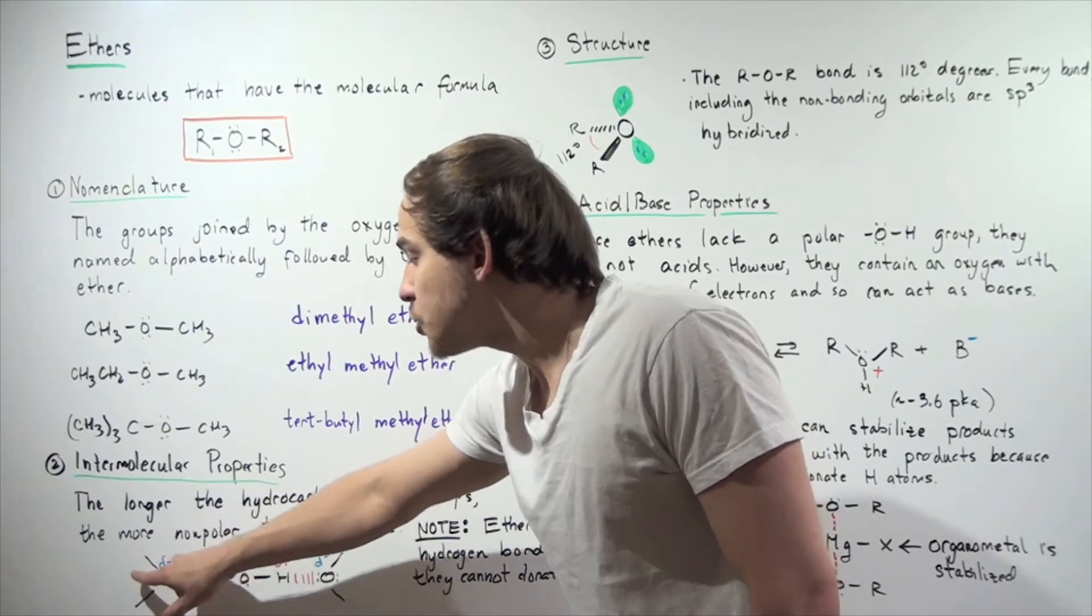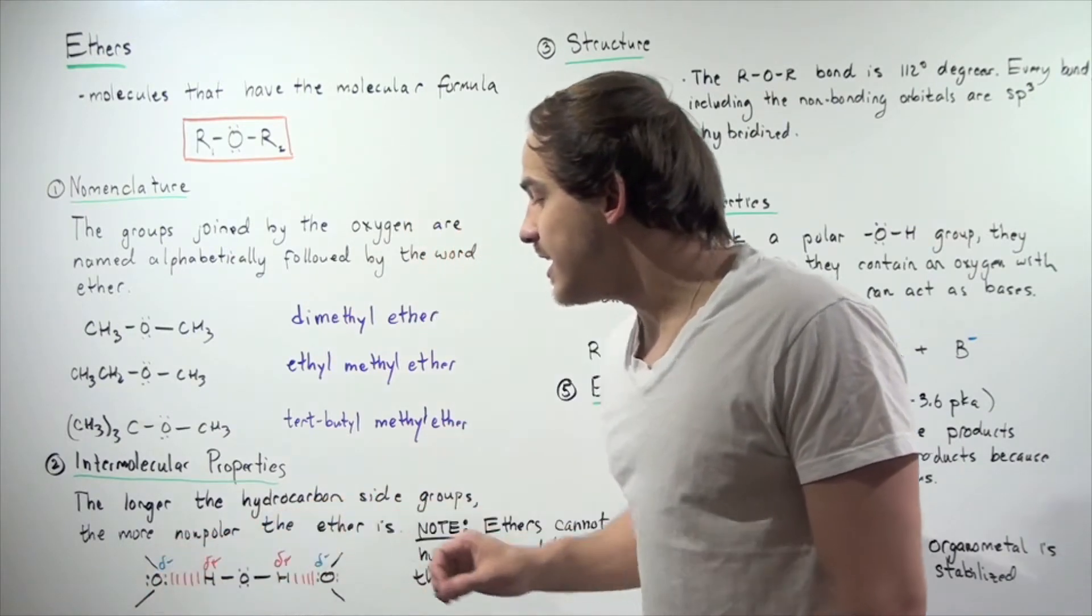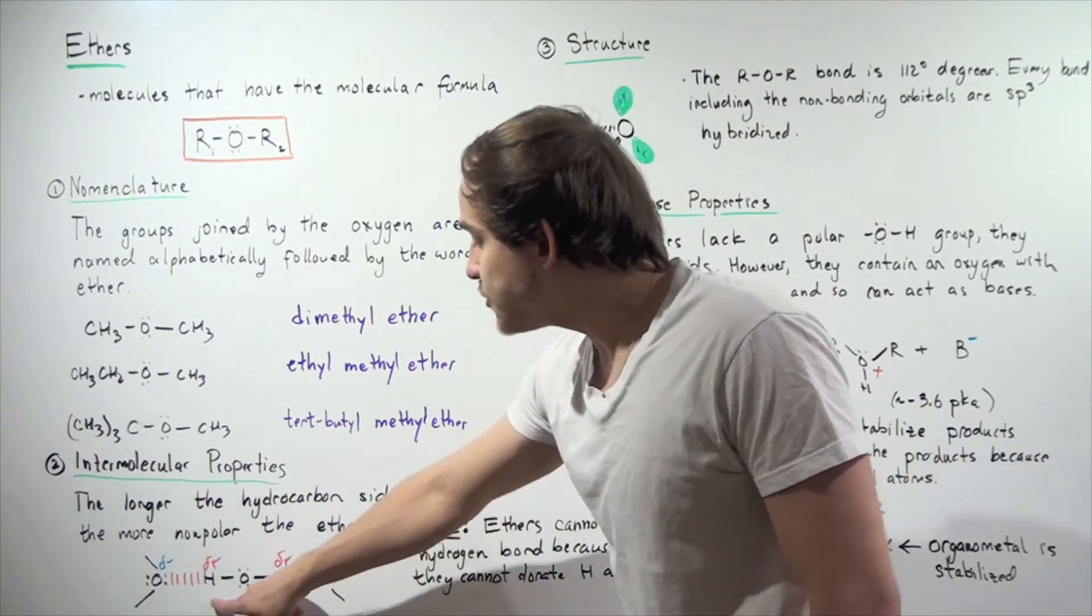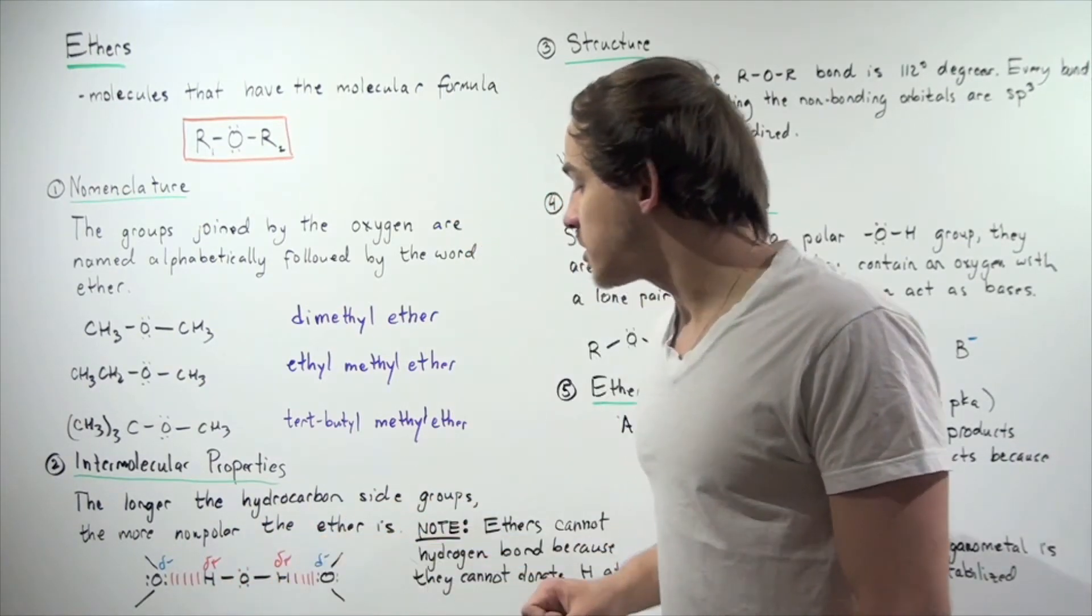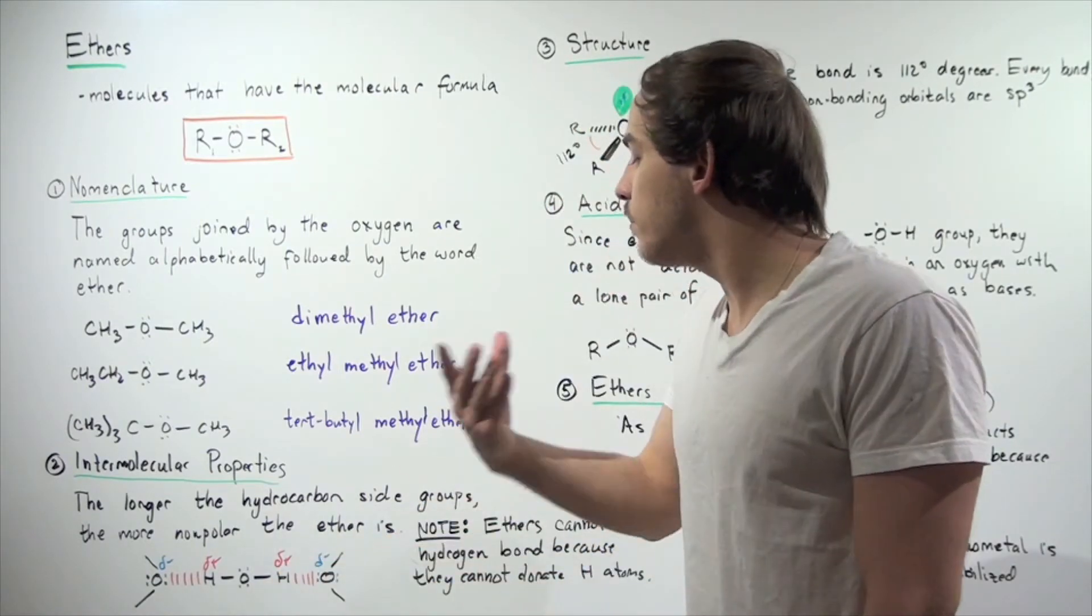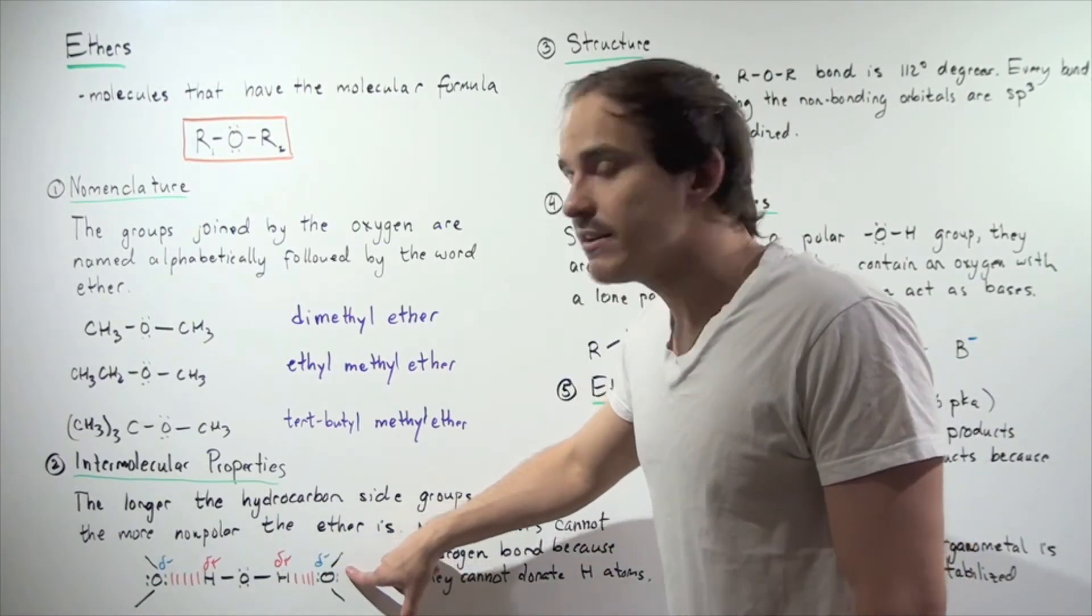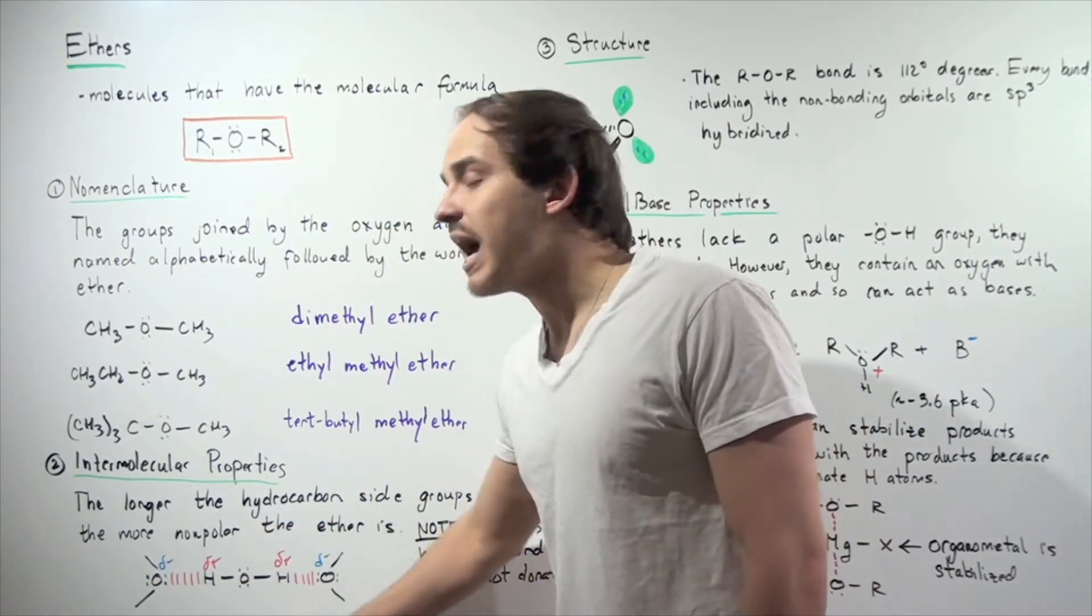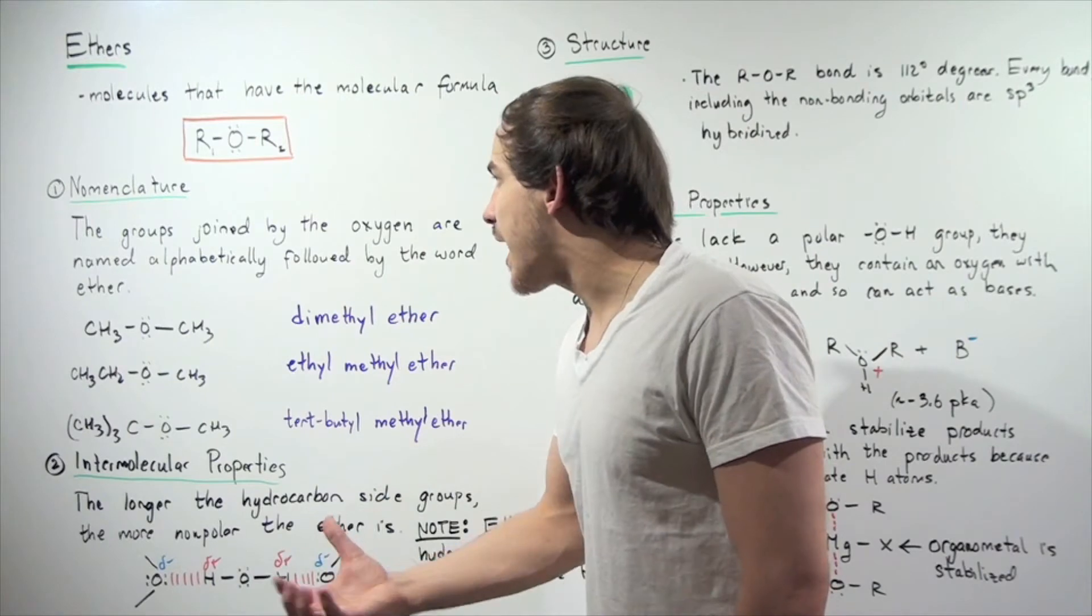The partially negative oxygen on the ether will bond with the partially positive H atom on the water. Likewise, this partially positive H atom will bond with the partially negative charged oxygen. So we will have dipole-dipole interaction.